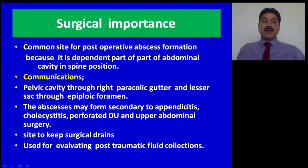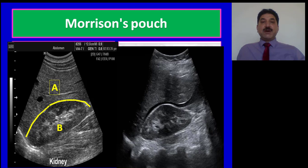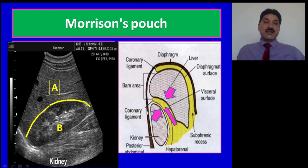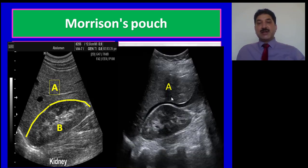It is also used for evaluating post-traumatic fluid collection. Let us recap the boundaries of Morrison's pouch: this pouch lies between the visceral surface of the right lobe of the liver and the anterior surface of the right kidney. On ultrasonography, the sonographic appearance of Morrison's pouch: since both structures are enclosed in peritoneum, under normal circumstances the interface between the two viscera gives a glistening appearance. When fluid collects in the peritoneal cavity and the patient is in the supine position, this fluid enters Morrison's pouch and is picked up by ultrasonography.